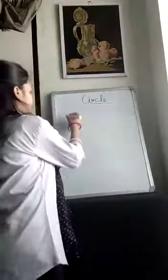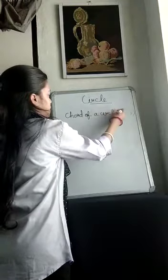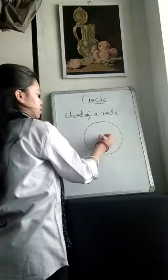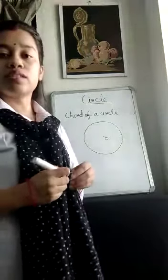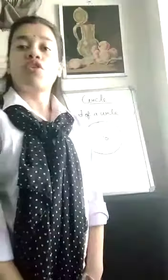Next is chord of a circle. For this, first we draw the circle and mark a center point. A line segment that joins two points on a circle is called chord of a circle.